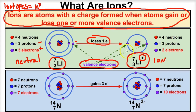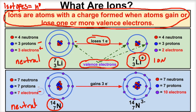Let's look at another example. Here we have a stable, neutral nitrogen atom — it has the same number of electrons as protons, so these cancel each other out. It's neutral and it has five valence electrons.